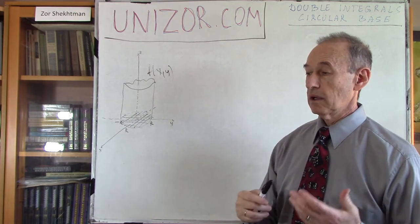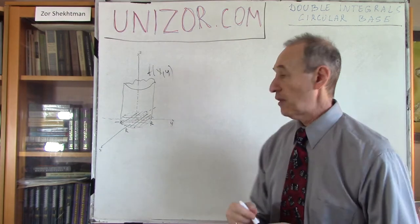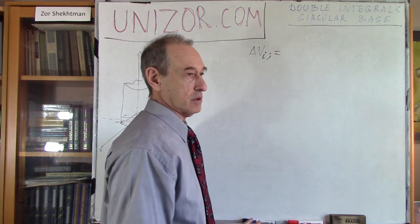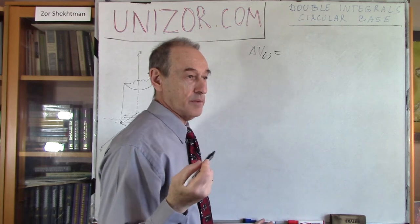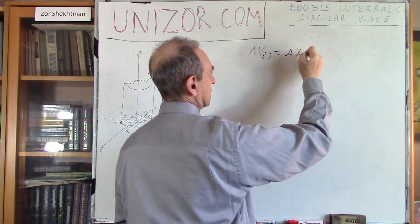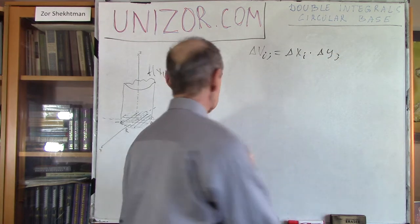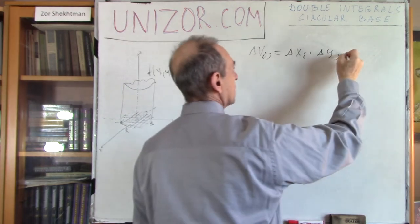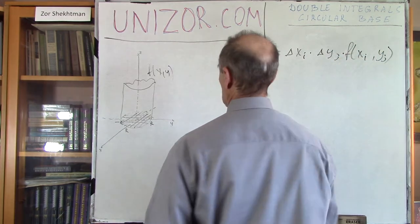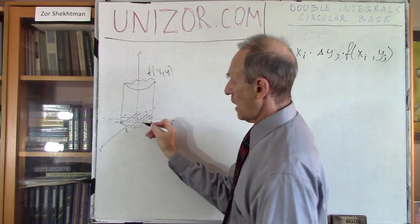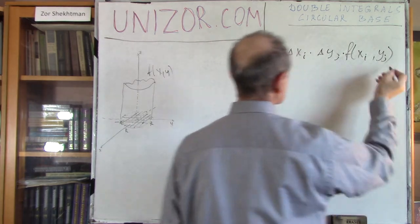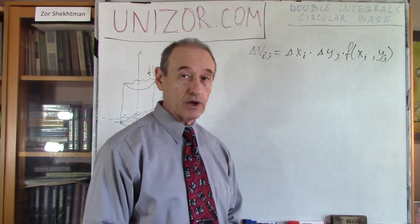To summarize: each particular volume, let's call it delta v_ij. What is this particular volume? It's a parallel pipette, so it will be the area of the base — delta x_i times delta y_j — times the height, where the height is f of x_i, y_j. Somewhere here there is a point x_i and y_j, and that's how my individual parallel pipette's volume would be expressed.